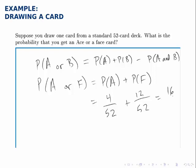Adding them together we get 16 out of 52. We can also simplify this down to 4 out of 13 and that's another way of thinking of it.